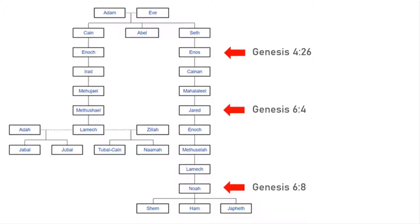Genesis 6:4, the days of Jared, is very important — this is when the sons of God came unto the daughters of man, known as the Benai Elohim. We'll cover that more in another study. Then we have Noah introduced in Genesis 6:8, where we have the Flood — Noah, Shem, Ham, and Japheth and their wives enter an ark, and everyone else in the world is destroyed.